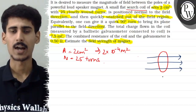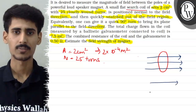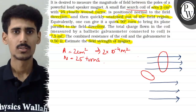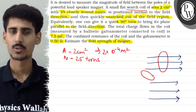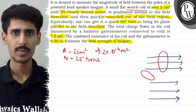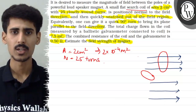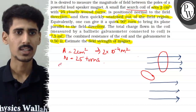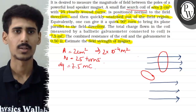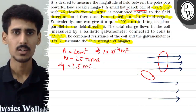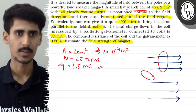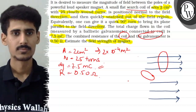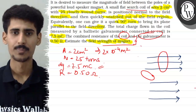Suppose after some time t, we snatch the coil out from this magnetic field. When we remove it from the field, a current is induced in the coil due to the change in magnetic flux. When we remove the coil from the field, the charge that flows is 7.5 millicoulombs. The combined resistance of the coil and the galvanometer is 0.50 ohms. We have to estimate the strength of the magnetic field.